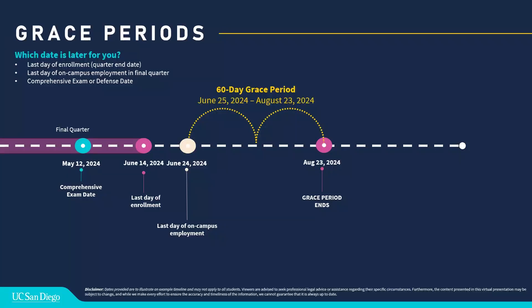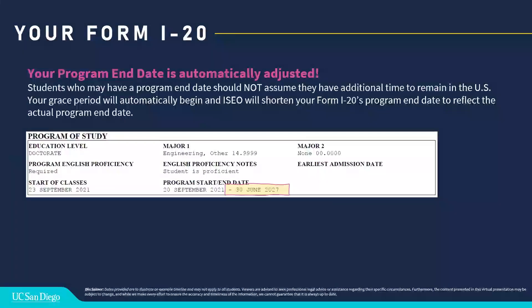Each student is different; each student's grace period may vary. A very common question we receive is: my program end date on my I-20 is far in the future, like 2027 — does that mean I have additional time? Unfortunately, no. Students who have a program end date in the future should not assume that they have additional time to stay in the U.S. Your grace period automatically begins after one of those three dates, and ISEO will automatically shorten your I-20 to reflect your actual program end date. It's common students complete a bit earlier, so it's important to understand that concept.